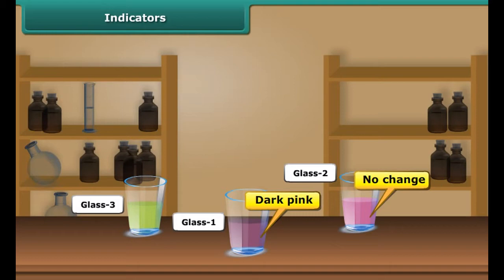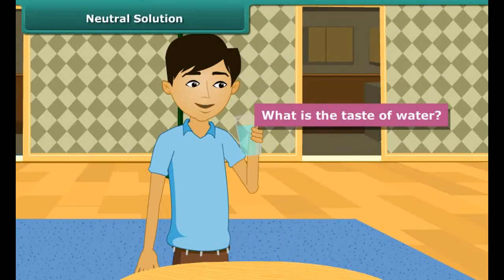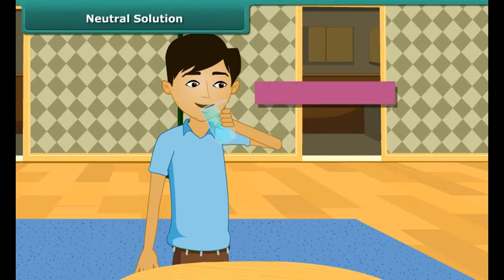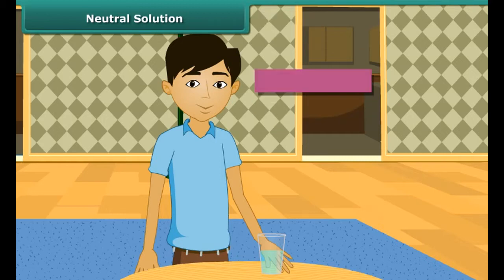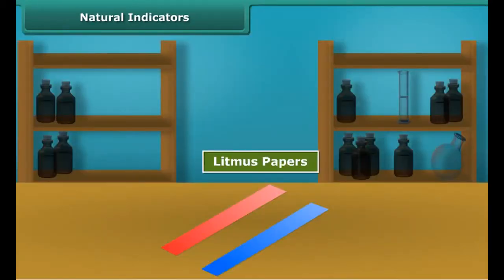There is no color change in glass two because water is neutral in nature. The color in the third glass changes to green. We can conclude that the indicator solution obtained from China rose turns bright pink in the presence of an acid and green in the presence of a base. We can put a drop of this indicator solution in any food item to know whether it is acidic or basic.